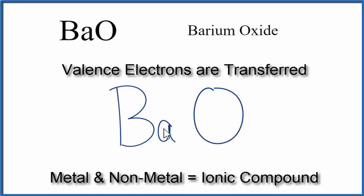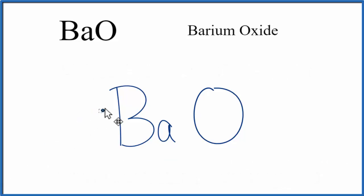In ionic compounds, valence electrons are transferred from the metal to the non-metal. When we look on the periodic table, we can see that barium has two valence electrons.